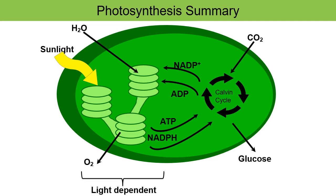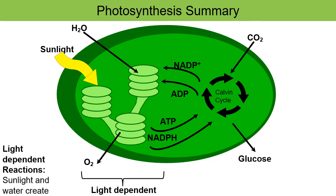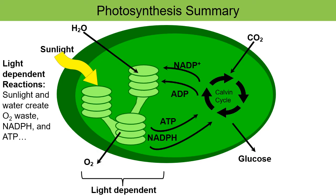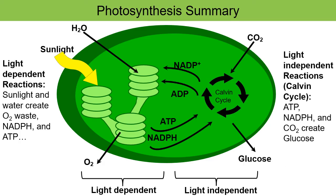Looking at the summary diagram: on the left are the light-dependent reactions, where sunlight and water create oxygen waste, NADPH, and ATP. On the right are the light-independent reactions — the Calvin cycle — where ATP, NADPH, and carbon dioxide from the atmosphere are used to create glucose. The glucose is then released into the cytoplasm of the cell.